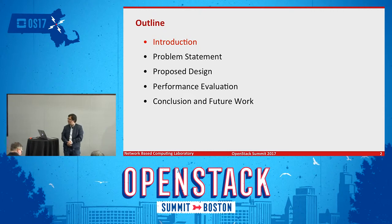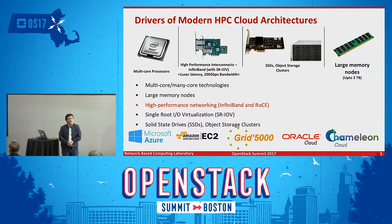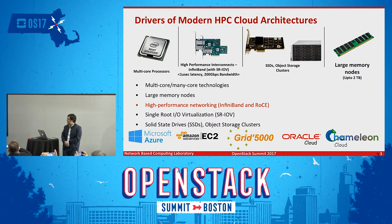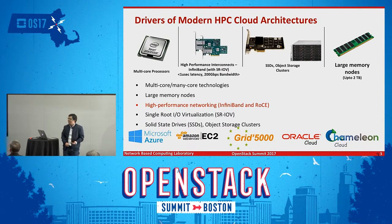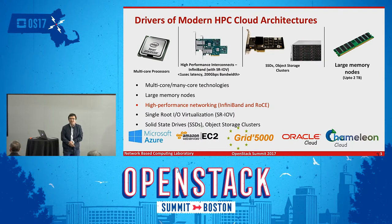The outline of this talk: first I'll briefly introduce the background and why we do this work, then the problems we are trying to solve, the design we are proposing, and how much performance gains we can achieve for different benchmarks and applications. These days, a lot of exciting high-performance hardware technologies are being used in many cloud instances — for example, many-core technologies, accelerators, Intel Xeon Phi, larger memory nodes, new memory like NVM, and high-performance networks such as InfiniBand and RoCE.